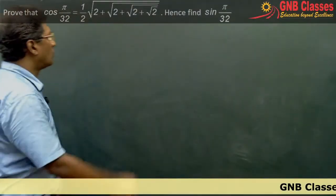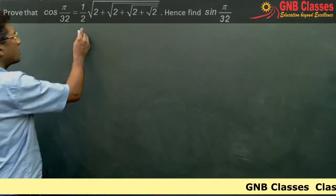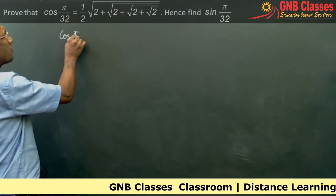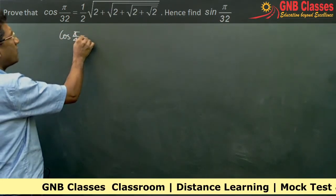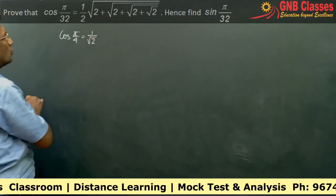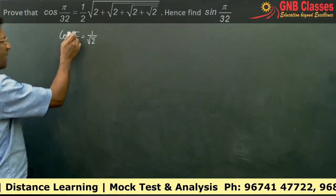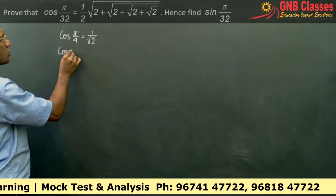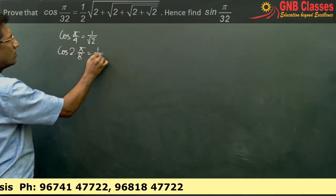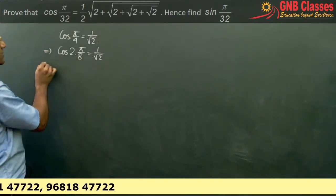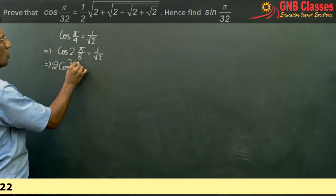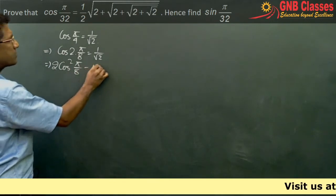In this problem we will start from cos(π/4). Cos(π/4) is 45 degrees, which is 1/√2. So cos(π/4) can be written as cos(2 × π/8), which in turn can be written as 2cos²(π/8) − 1.